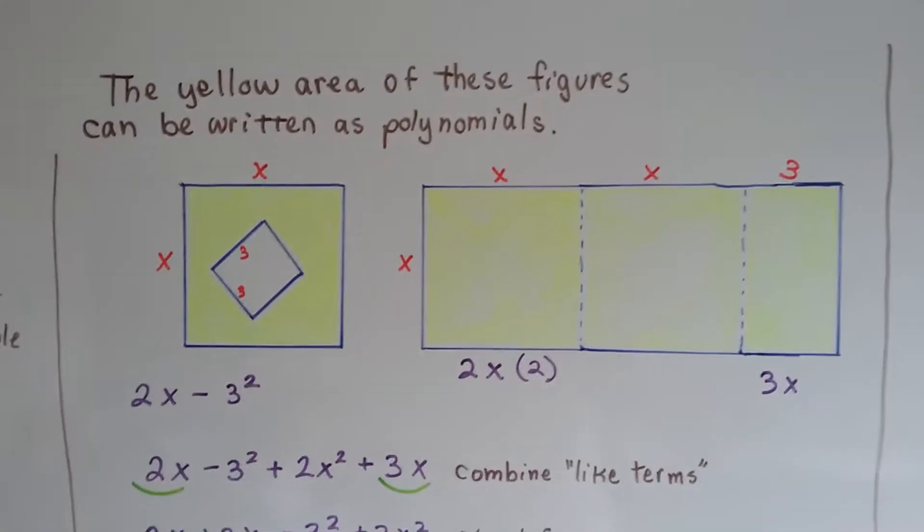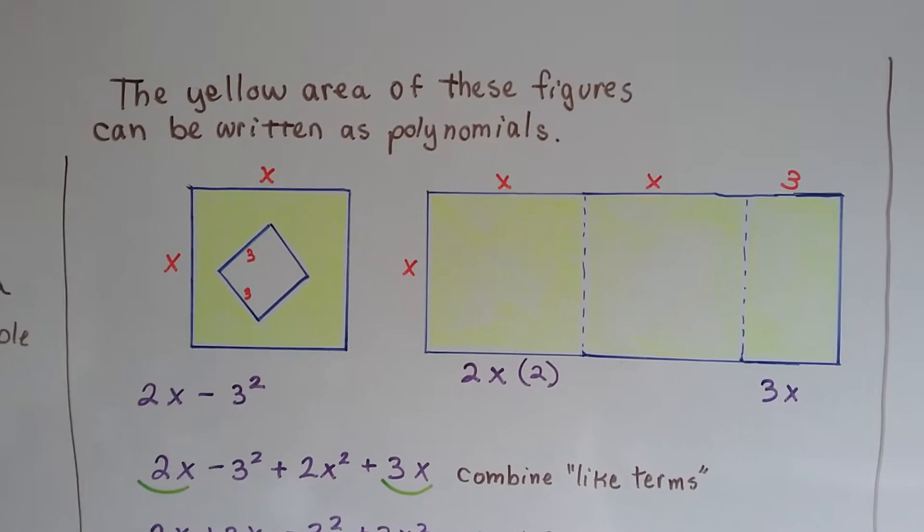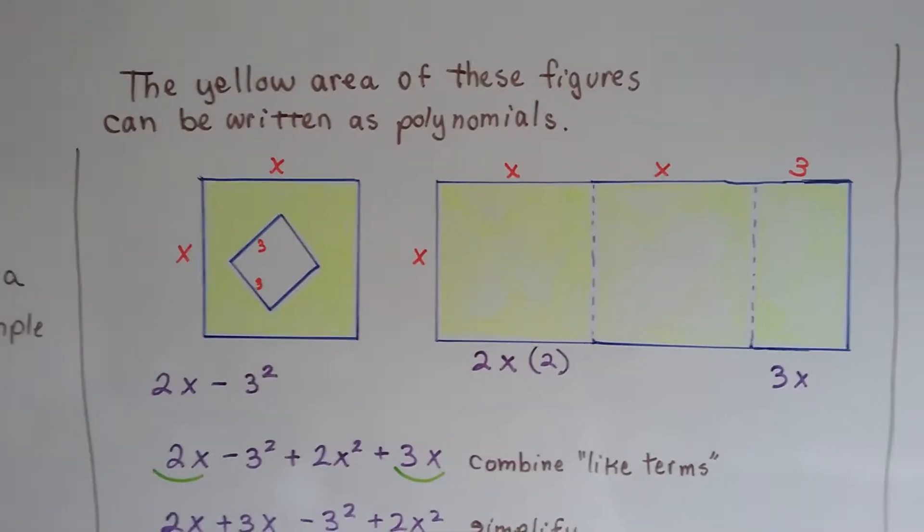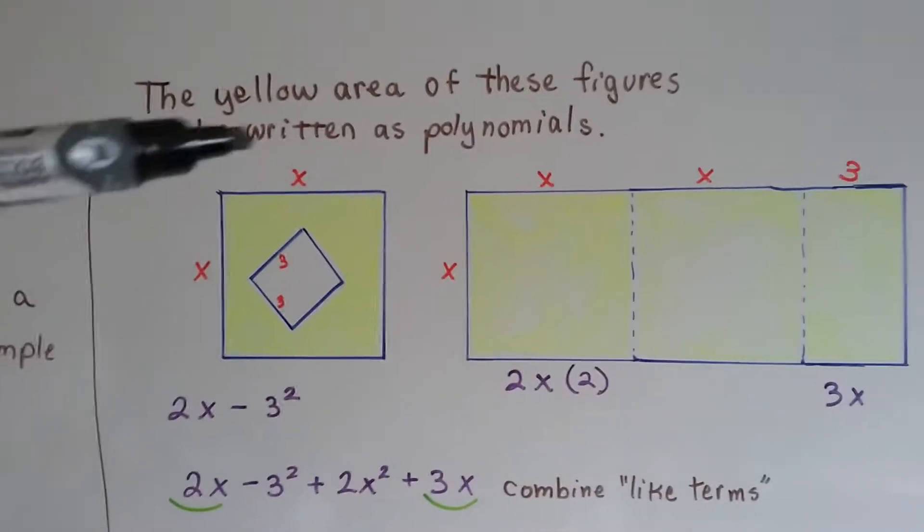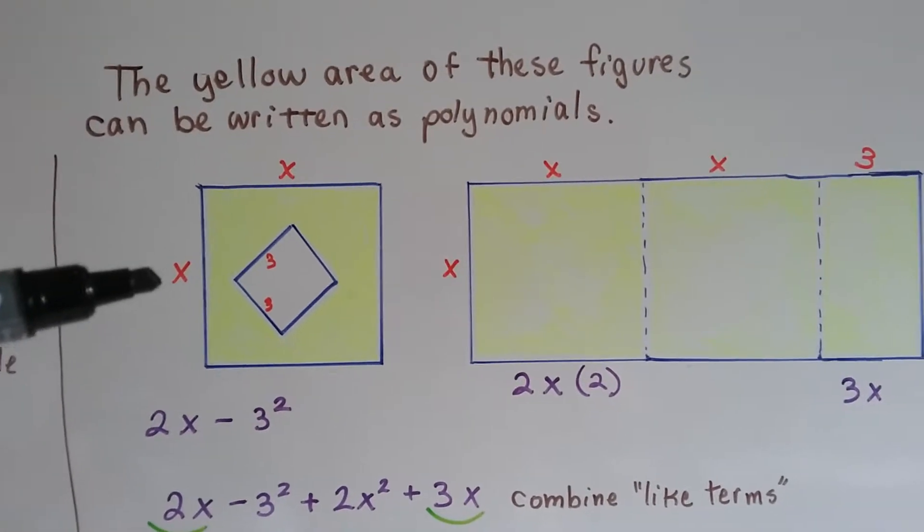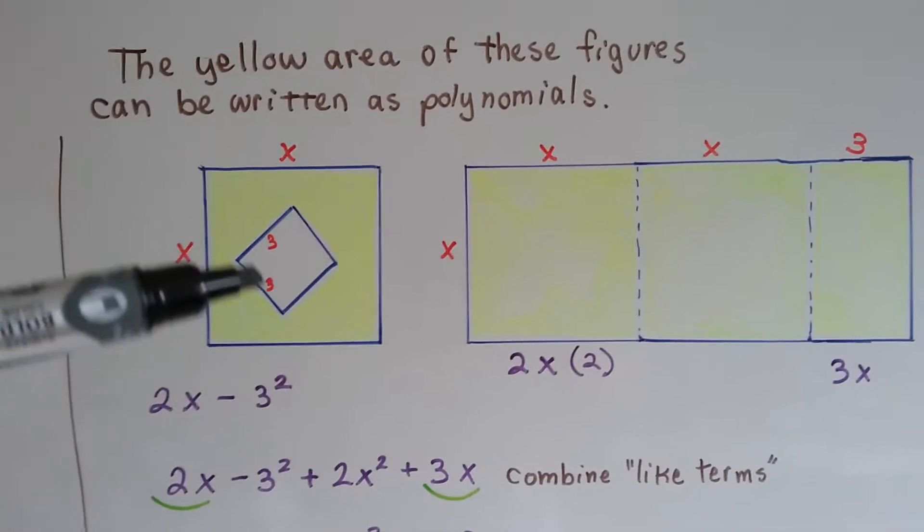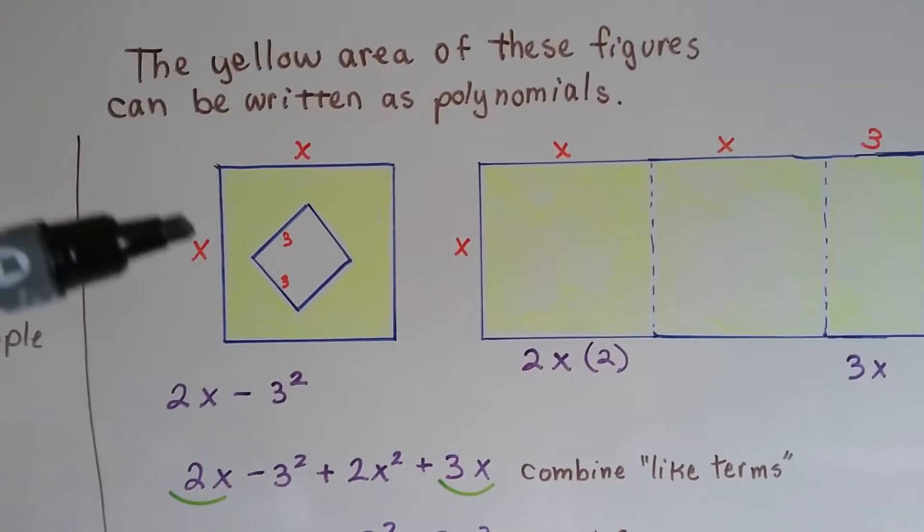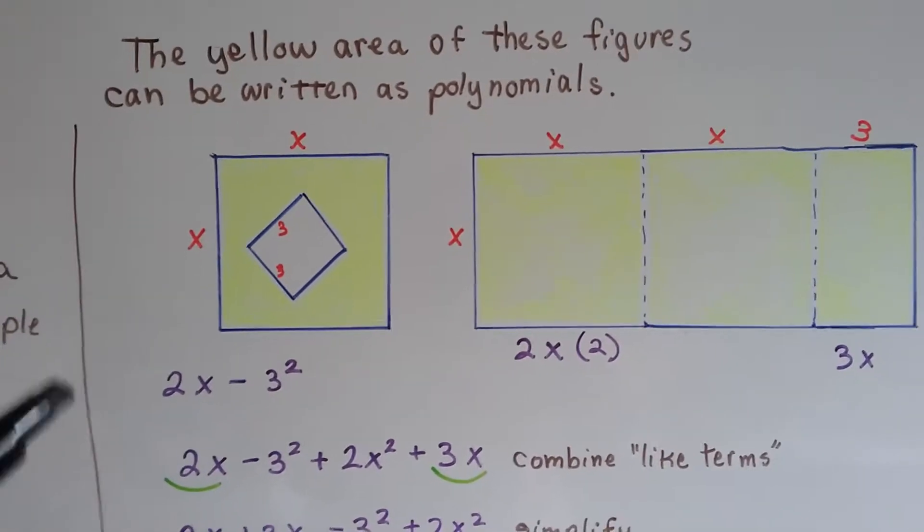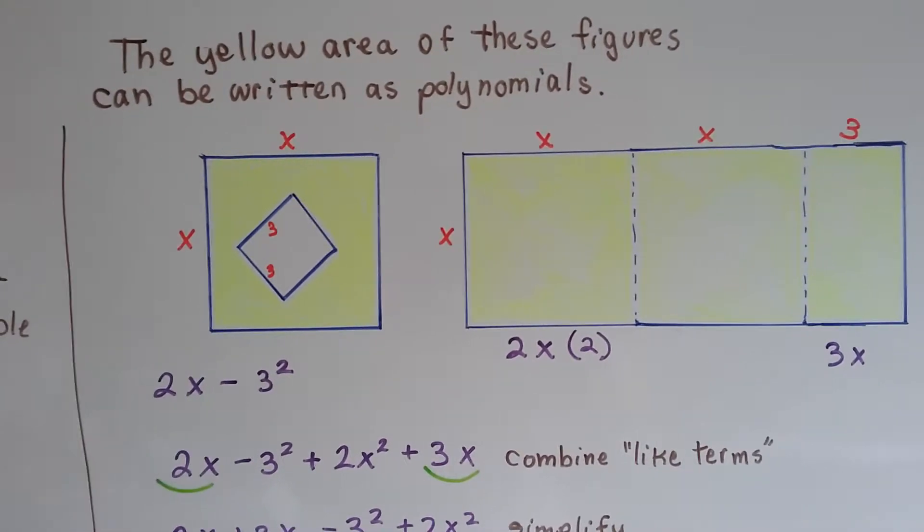We can write polynomials doing this. The yellow area of these figures can be written as polynomials. In this one, we've got this side is an x and this side is an x. We don't know what they are, but this little square inside is a 3 by 3, so that's a 9. And this is an x and an x, that makes 2x. So now we've got 2x minus 3 squared.